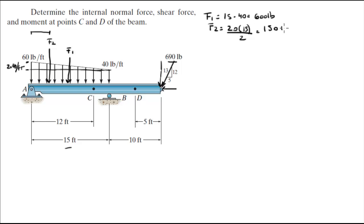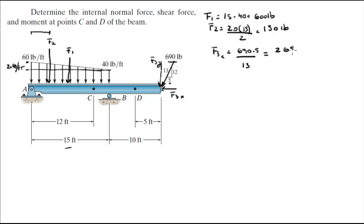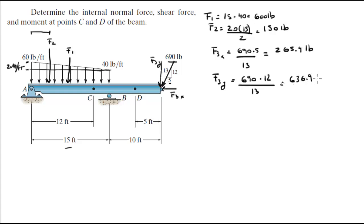F2 equals 150 pounds. Now, let's call the components F3X and F3Y. F3X equals 690 times 5 divided by 13, which equals 265.4 pounds. F3Y equals 690 times 12 divided by 13, which equals 636.9 pounds.